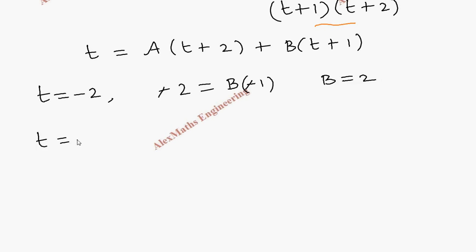Similarly, when we take t as minus 1, so minus 1 equal to a into minus 1 plus 2 is 1. And the another term is 0. So from this, the value of a is minus 1.